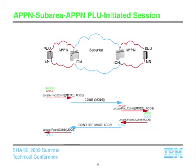So it takes that APPN class of service name and maps it back to a separate class of service name. That's right — on the way over, we map the SNA log mode name and class of service name to an APPN class of service name, which could be completely bogus. And then when that APPN class of service name comes back on the reply, we take the APPN-to-separate mapping table and map that bogus APPN cost name to another — possibly even more bogus — separate cost name. So we actually go through cost mapping twice in this host: separate to APPN, then APPN back to separate.